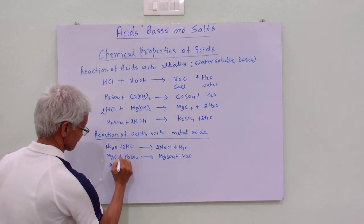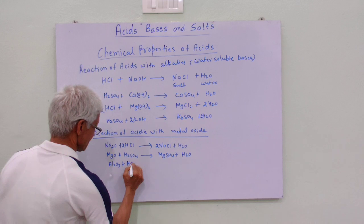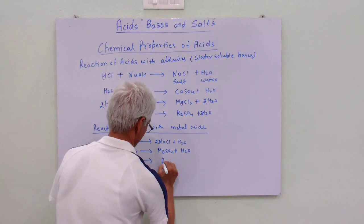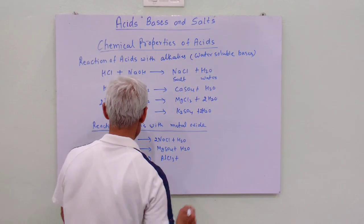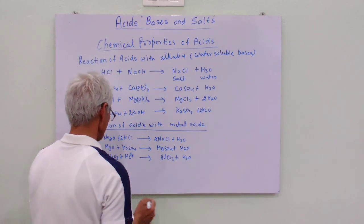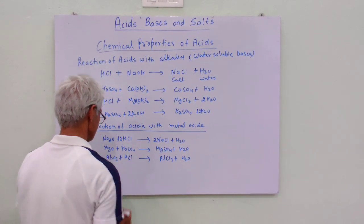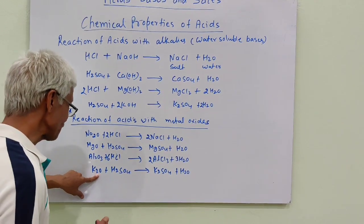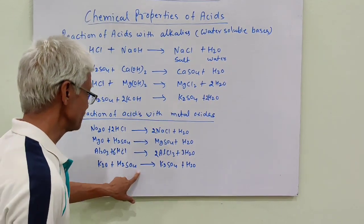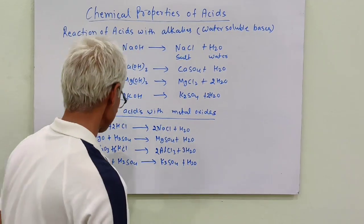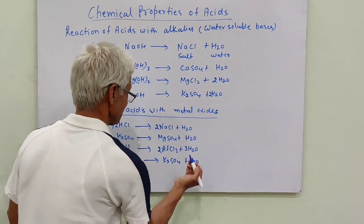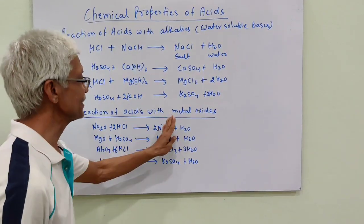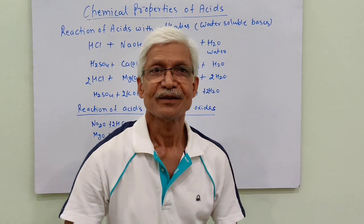Al₂O₃ plus HCl also follows the same pattern. Next reaction: potassium oxide reacts with sulfuric acid, it forms potassium sulfate and water. These are the salt and water. Therefore, in this reaction, acids react with metal oxides to form salt and water.